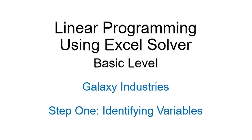For this video, I use the Galaxy Industries example from the book Applied Management Science by Lawrence and Pasternak. This first video in the two-part set focuses on the best technique to set up word problems and identify the variables critical to the solution. The second video focuses on entering the objective function and the constraints into Excel and using the Solver add-in to optimize profits.